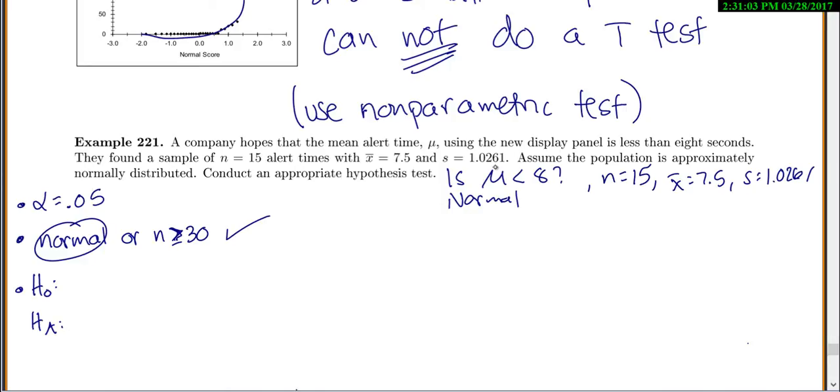We need to write our null and alternative hypotheses. So our alternative, we're hoping to show that our mean is less than 8. So that would be my alternative, which means then that my null is that it's equal to 8.